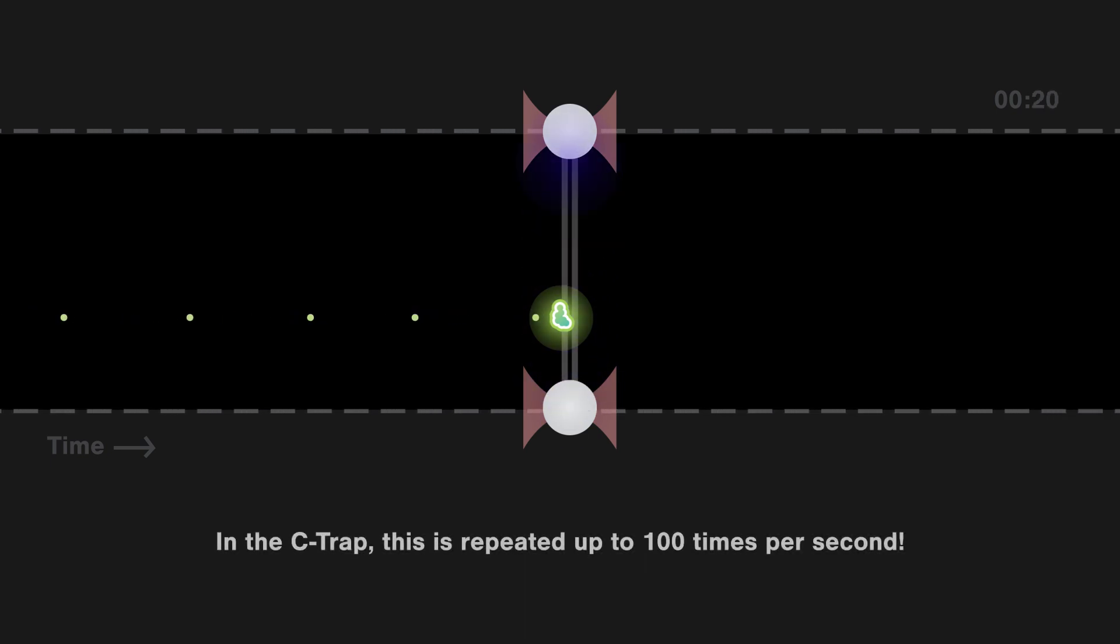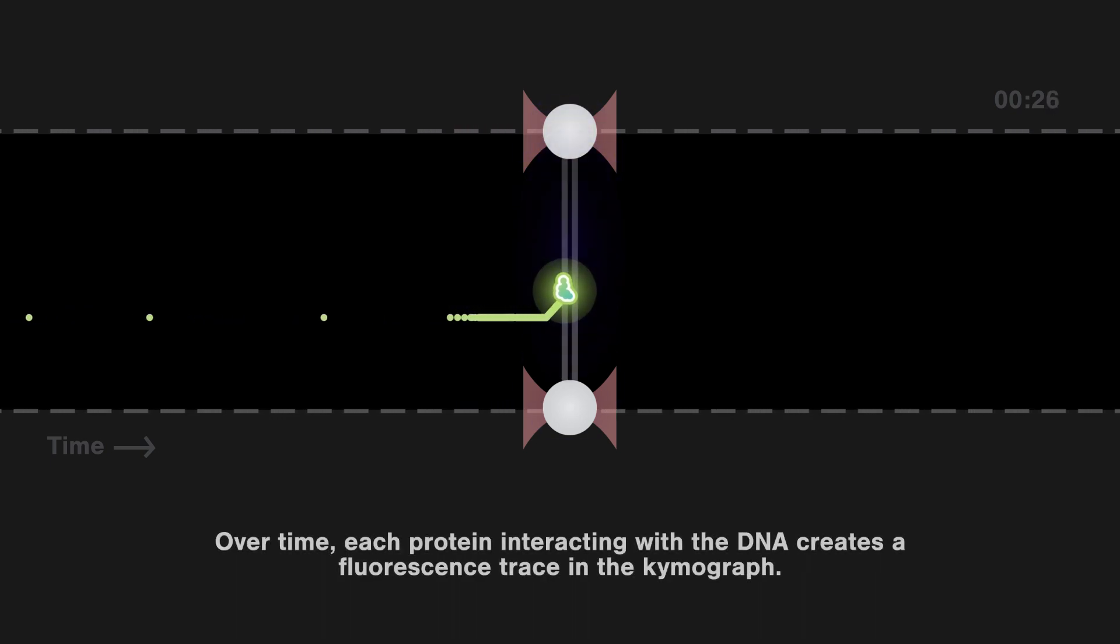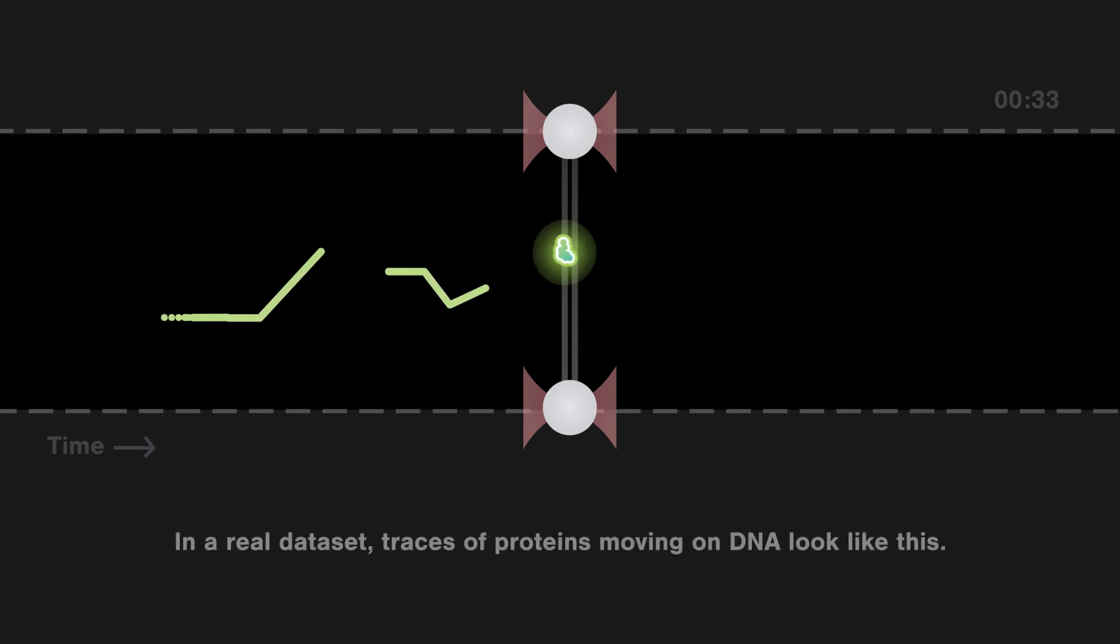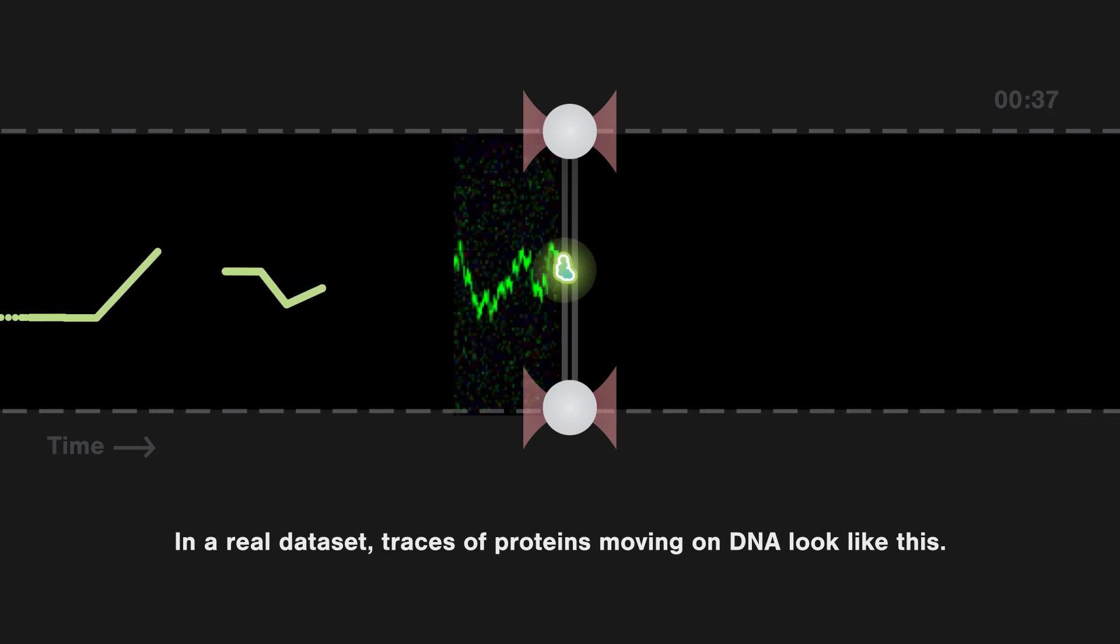In the CTRAP, this is repeated up to 100 times per second. Over time, each protein interacting with the DNA creates a fluorescence trace in the kymograph. In a real data set, traces of proteins moving on DNA look like this.